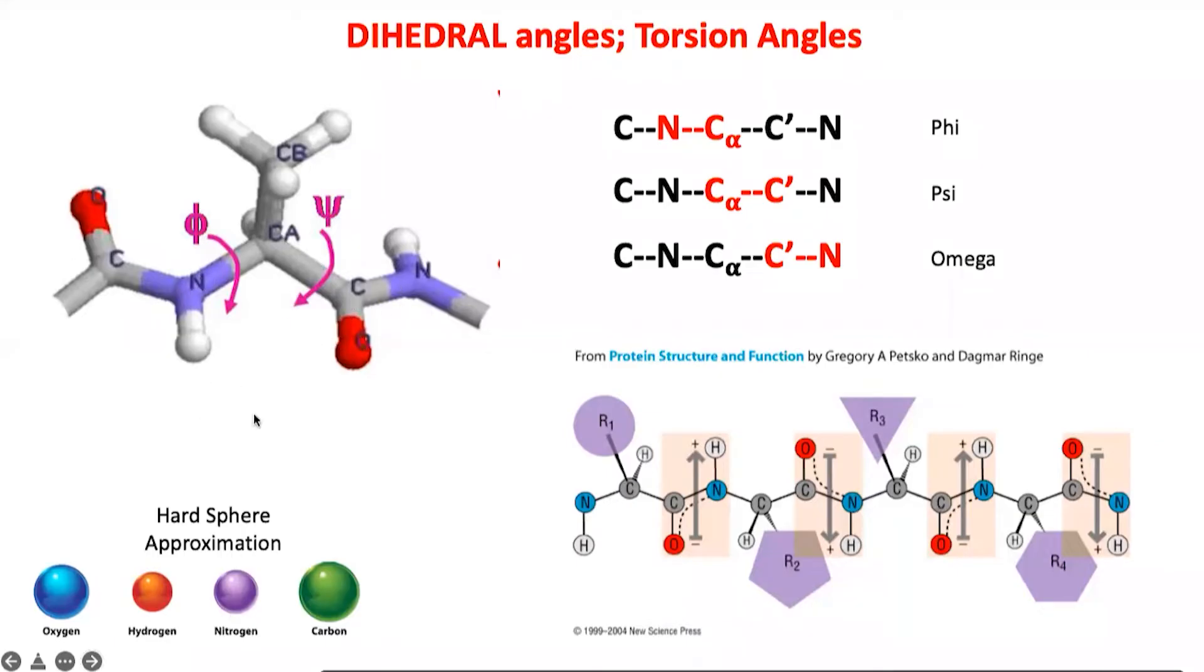Over here these four atoms—now I'm going to circle them using green as a color—this atom, this atom, this atom, and this atom, these four atoms define the phi angle, which is C-N-C alpha-C prime.